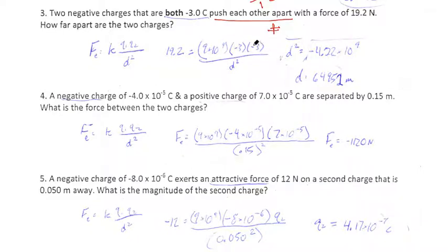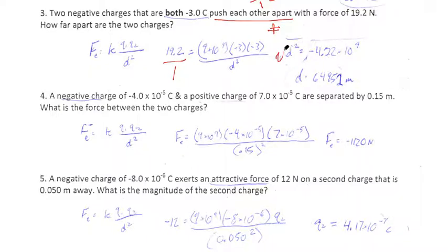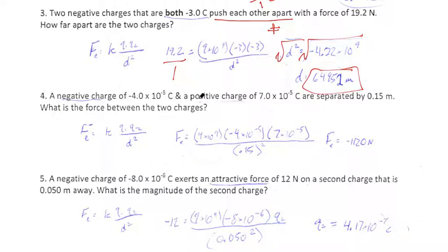I go ahead and figure out the rest from there. Cross multiplication — 19.2 over 1 doesn't change anything mathematically but it helps conceptually. I end up with D squared equals negative 4.22 times 10 to the 9th divided by 19.2. We're not looking for D squared, we're looking for D, so I have to take the square root of both sides. I end up with approximately 64,952 meters. Take that, plug it back in for D, square it, do everything along the top, divide by the sub-answers, and you should end up somewhere near 19.2.